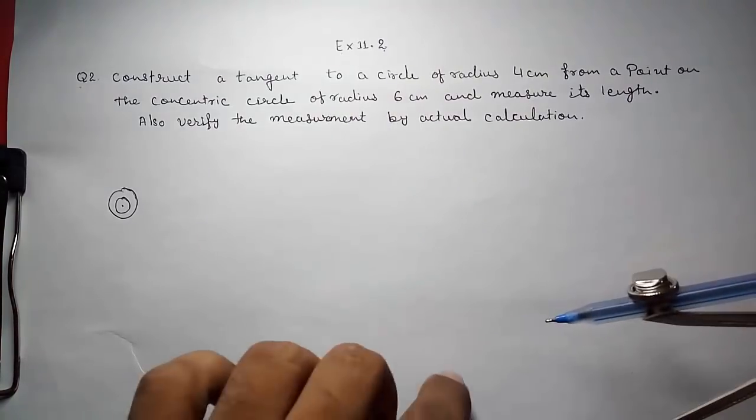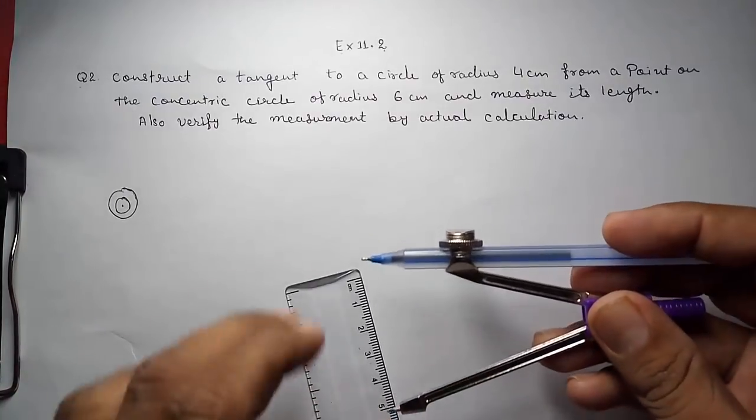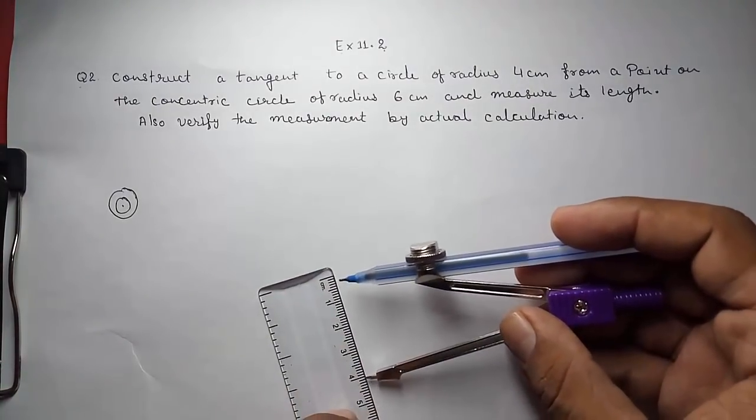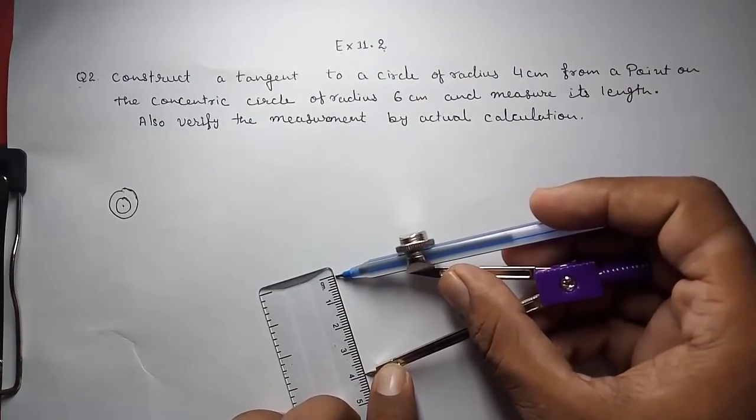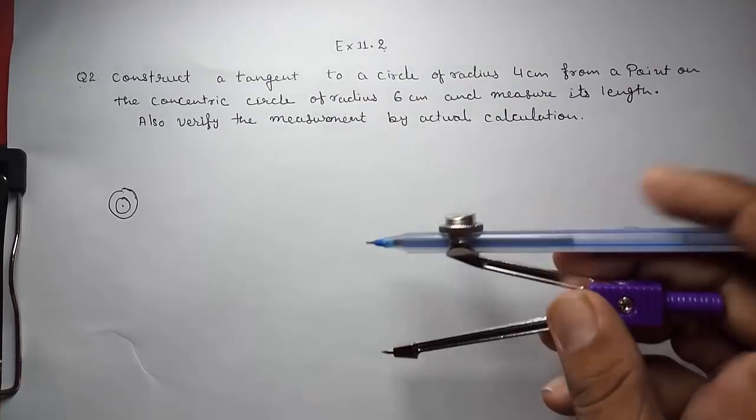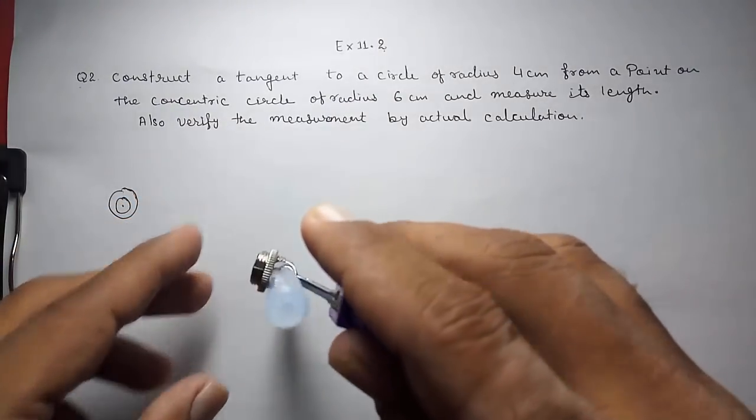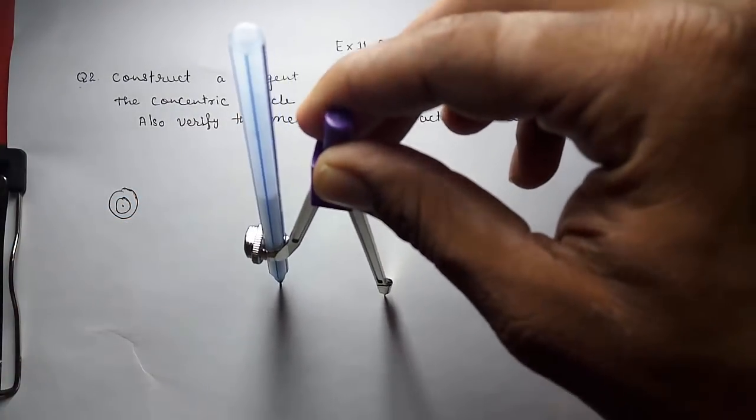First we are going to draw that. First we have to measure 4 cm as the radius of our first circle. So this will be 4 cm. You can see I am drawing it.